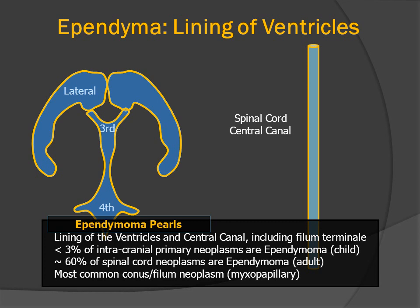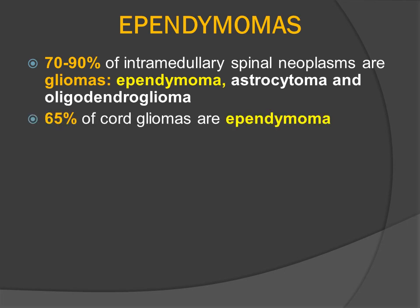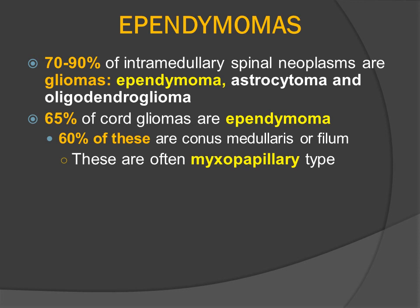While less than 3% of intracranial primary neoplasms are ependymoma — and these most commonly present in children — approximately 60% of spinal cord neoplasms are ependymoma, and these typically present in adult patients. The most common lesion in the conus medullaris and filum terminale is the myxopapillary ependymoma. The most common neoplasms of the cord are gliomas, and the most common subtype is ependymoma, which may occur anywhere within the cord but tends to predominate in the cervical cord in adults and in the area of the conus medullaris.